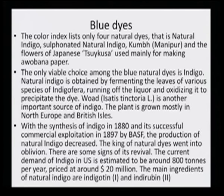Natural indigo is obtained by fermenting the leaves of various species of Indigofera, running off the liquor and oxidizing it to precipitate the dye. It is not that the direct extract can be used as a dye — there is a certain amount of procedure involving oxidation-reduction reaction, and only after oxidation does the dye come up with its true color.